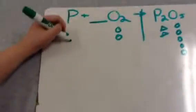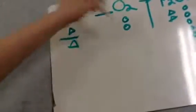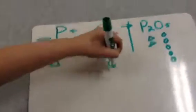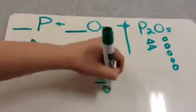As you can see, the equation isn't equal, so we have to add another triangle and two more atoms of oxygen.